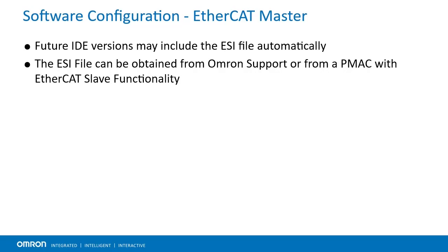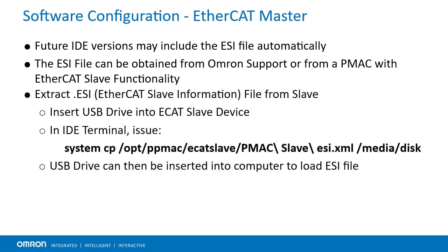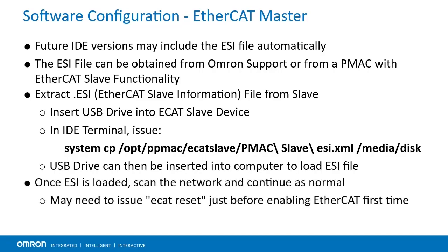If you insert a USB drive into the PMAC and then boot it up, you can copy the file from the PMAC onto the USB drive. The following command, shown in bold on screen, can be entered into the terminal window of the IDE. It will copy the ESI file off the PMAC EtherCAT Slave device and into the root directory of the inserted USB drive. After this is done, the USB drive can be inserted into your computer and loaded into the correct software. If you are using a PMAC as your master, you can load the ESI file into the IDE and scan the EtherCAT network. You may need to issue an ECAT reset to the master after doing this before the first time you enable EtherCAT.